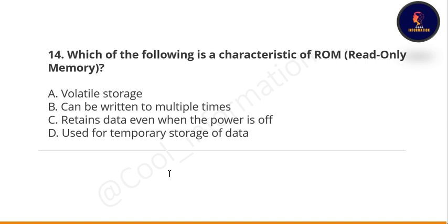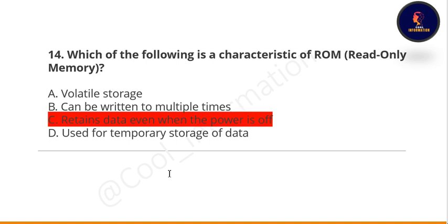Next question: which of the following is a characteristic of ROM? Option A: volatile storage. Option B: can be written to multiple times. Option C: retains data even when the power is off. Option D: used for temporary storage of data. The correct option is C — retains data even when the power is off.